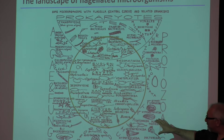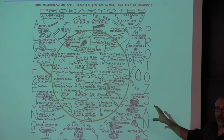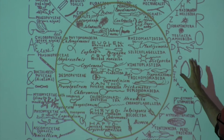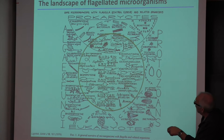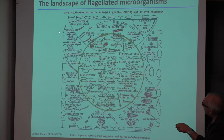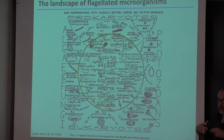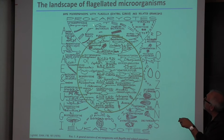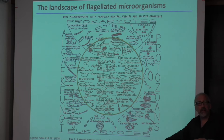This is a picture from Sir James Lighthill's great 1975 paper — a landscape of microorganisms. Prokaryotes are at the top and eukaryotes at the bottom; algae and fungi on the left, protozoa on the right. Prokaryotes are single-celled organisms without a nucleus; eukaryotes have a nucleus — we are all eukaryotes. As we go further down among eukaryotes we eventually reach dogs, cats, and people.